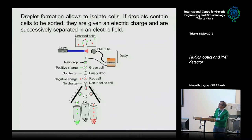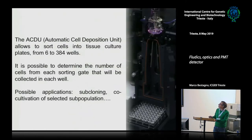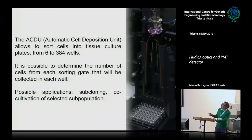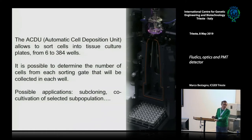We will see the sorting principle in more detail during the practical part. Also, some instruments — including the one at ICGB — have an automatic cell deposition unit, which allows sorting cells directly into tissue culture plates from 6-well to 384-well plates. This is very useful to put cells directly in culture, to minimize manipulation, or for subcloning — sorting a single cell per well.